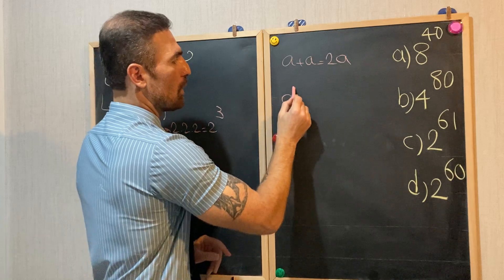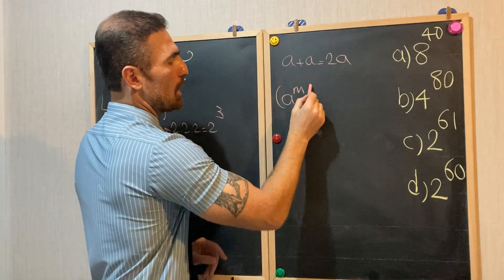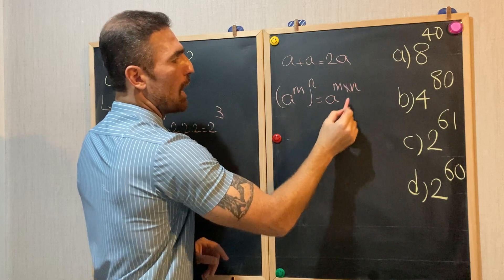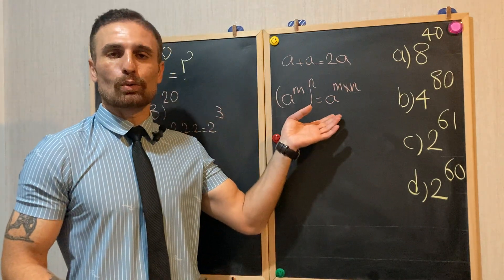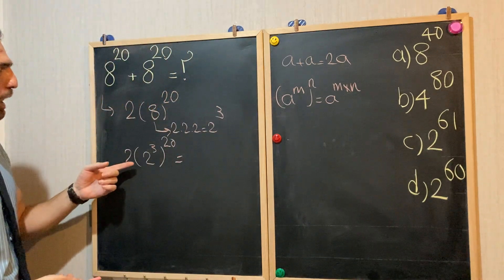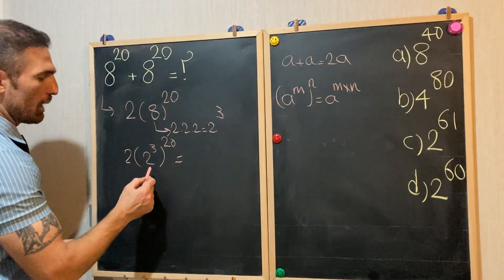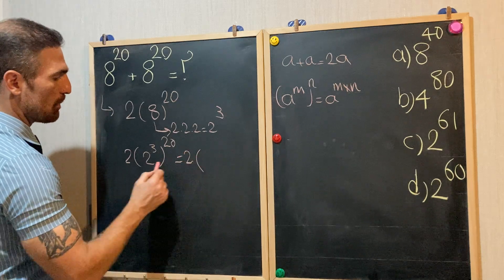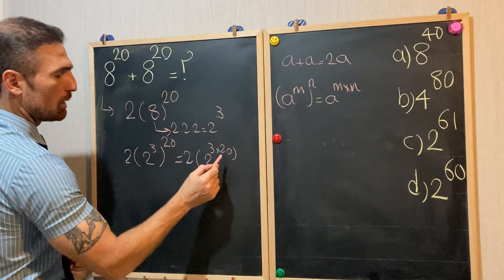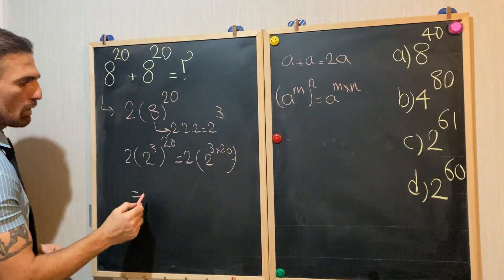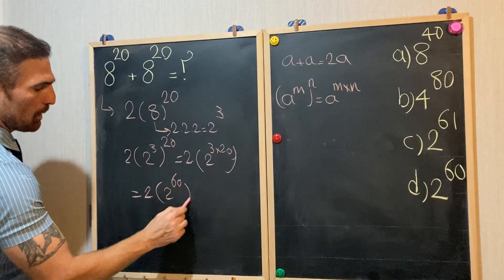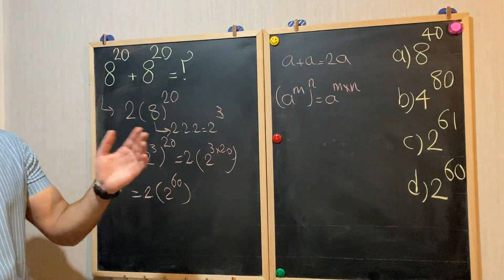As you know, a to the power of m raised to the power of n equals a to the power of m times n. We are going to use this rule to continue our solution. Therefore, 2 times (2 to the power of 3) raised to the power of 20 equals 2 times 2 to the power of 60.